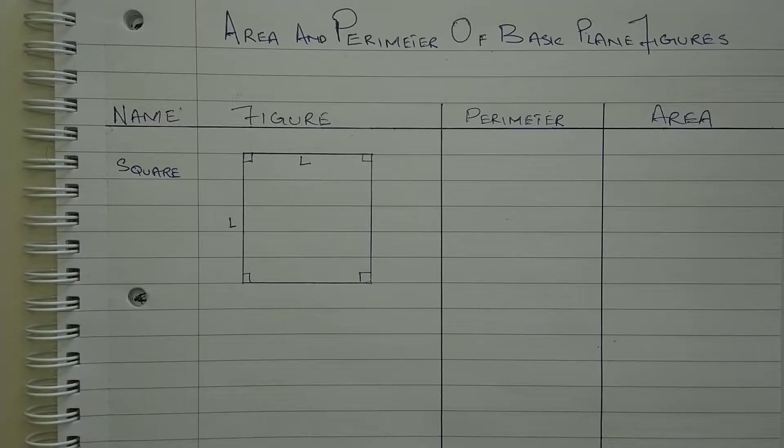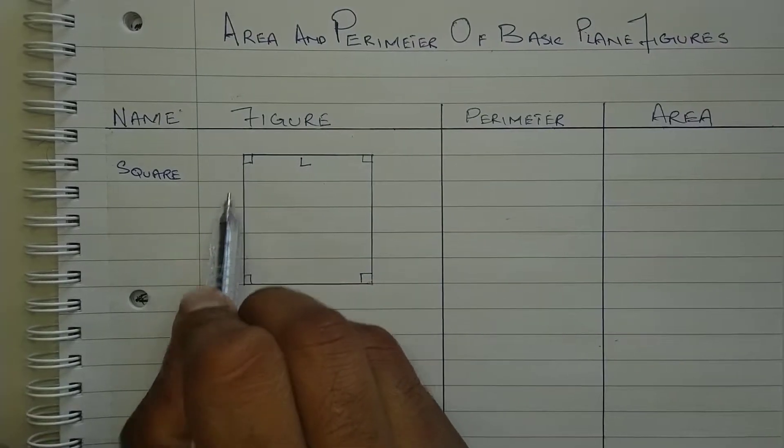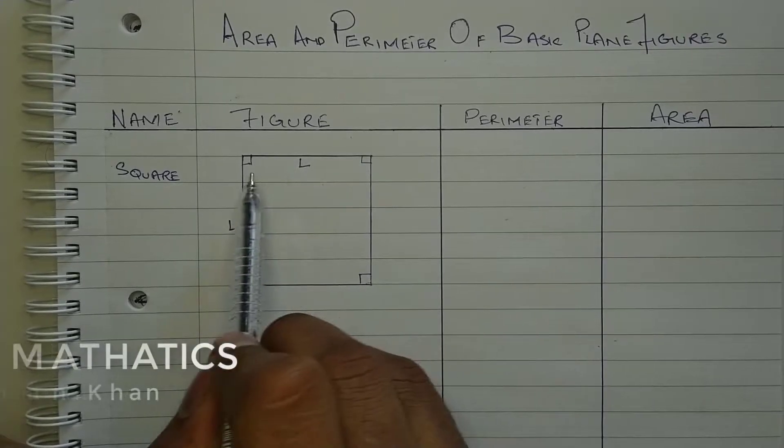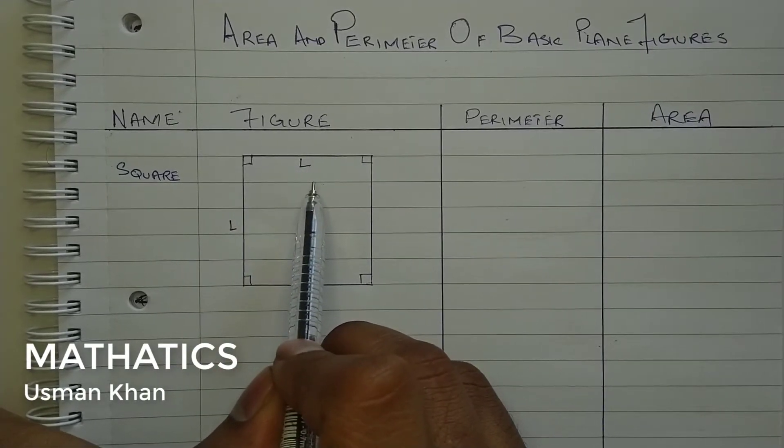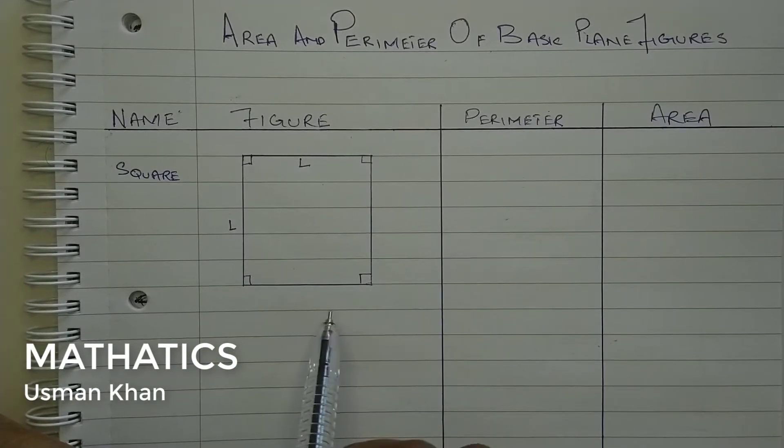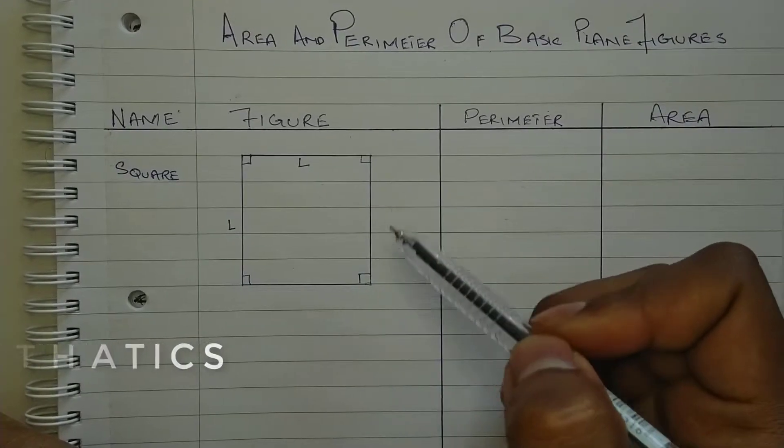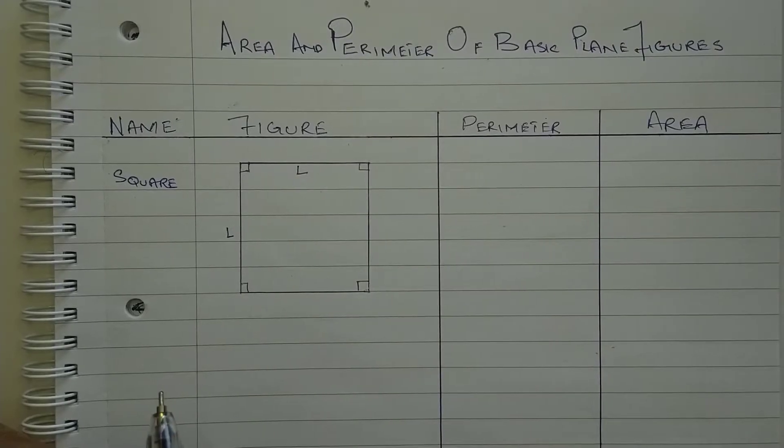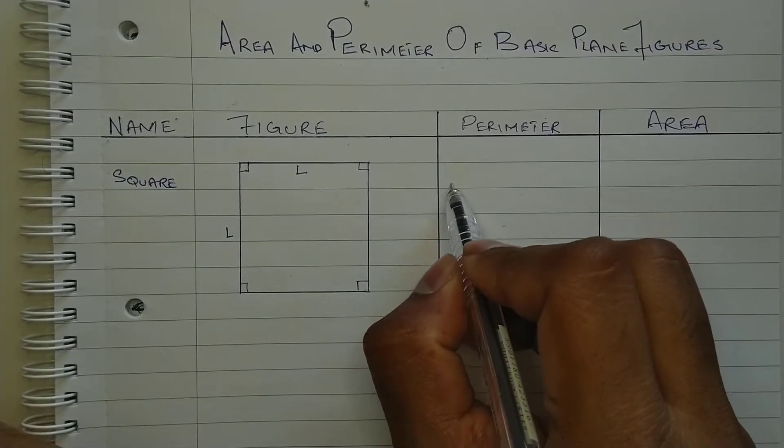Square is a shape with all four sides of equal length. As all sides are equal, if this side is of length L, then this side will also be of length L. Same, this side will also be of length L and this side will also be of length L. All sides are of equal lengths which is equal to L.